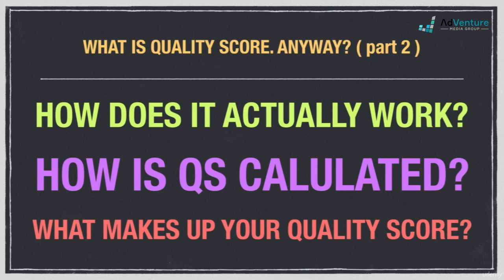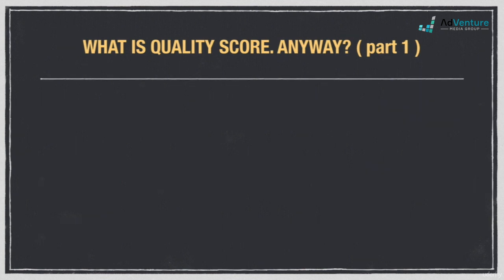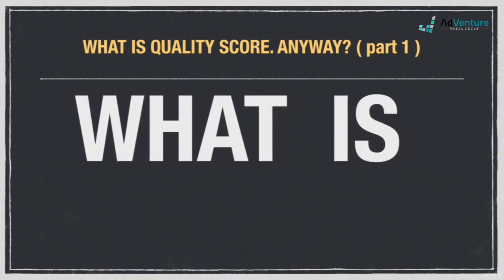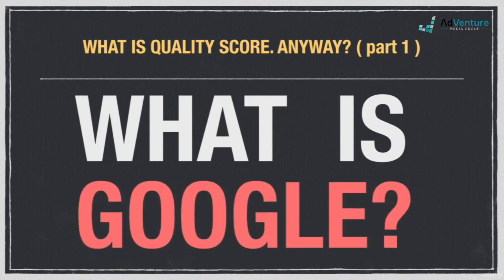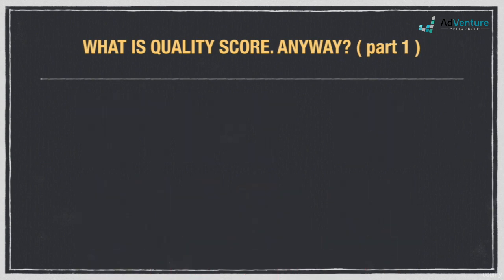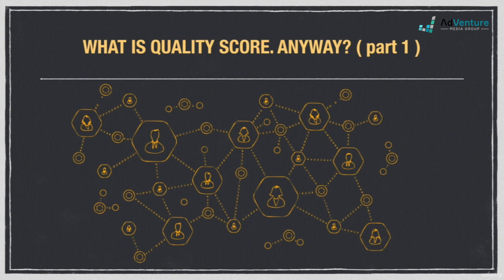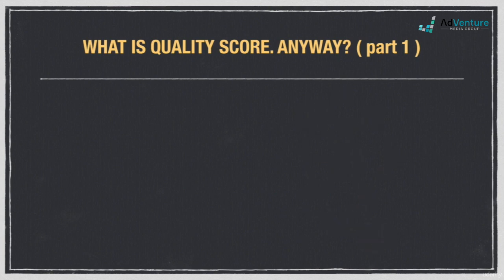We'll get started with a brief overview of what quality score is, what it means to Google, and what Google looked like in the pre-quality score era. In order to first understand what quality score is and how it came to be, it's important to first understand what Google is at its most fundamental level. Essentially, Google is a massive referral service. People come to Google looking for referrals. When people need to find something on the internet, they ask Google where they could find it.